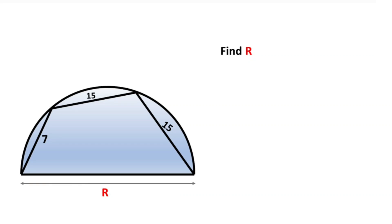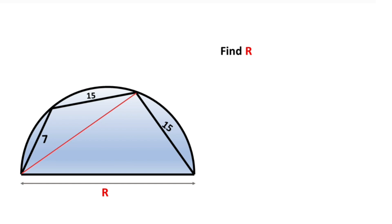In this problem we have a semicircle where one side is 7, another side is 15, and the diameter of the semicircle is s. First, if you connect these two corners and call this angle alpha, the opposite sides of alpha have the same length.